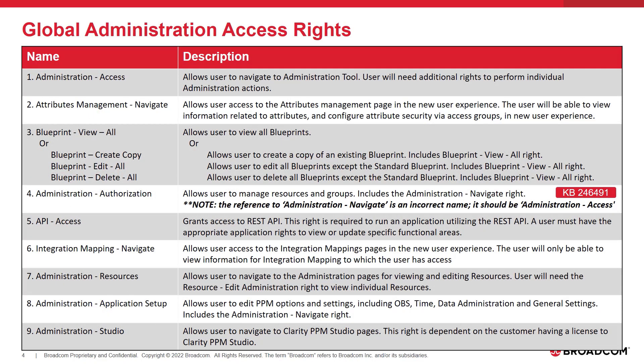I will cover these specific access rights that can be granted in different combinations to a user at the global level. The name and description can also be found in Classic PPM Administration License Information Portlets. The minimum access for blueprints administration is a view permission. Therefore, any of the blueprint rights can be granted because they contain the view permission.